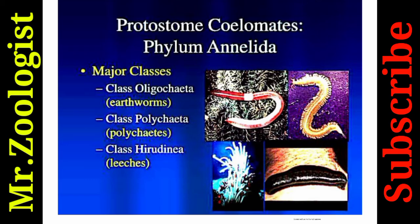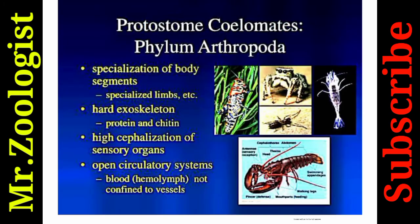Phylum Arthropoda: body segments are specialized, with segmented bodies and specialized limbs. A hard exoskeleton made of protein and chitin is present. Sensory organs are highly developed, with antennae. They have an open circulatory system — blood called hemolymph is confined to vessels.